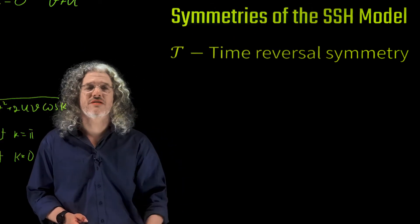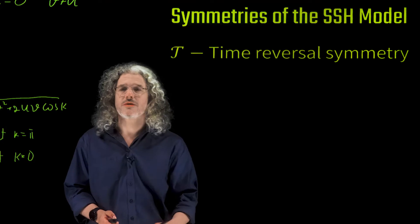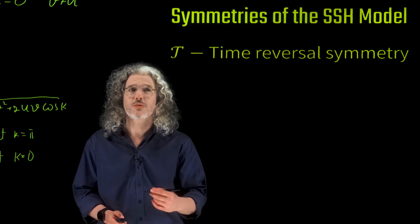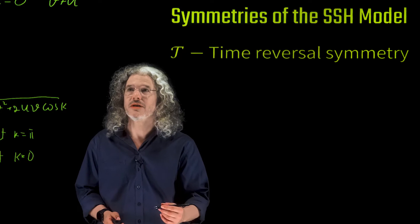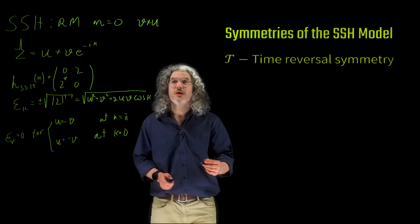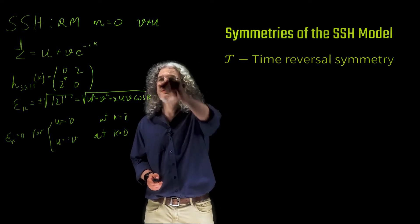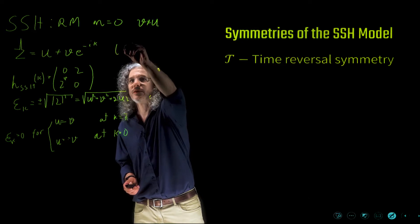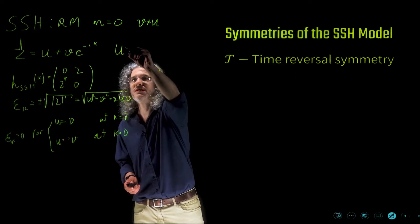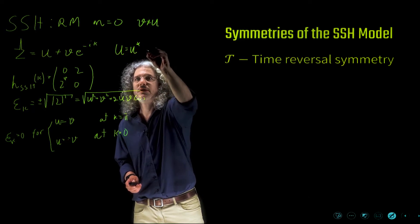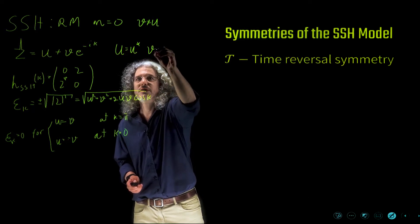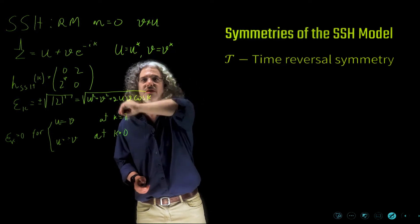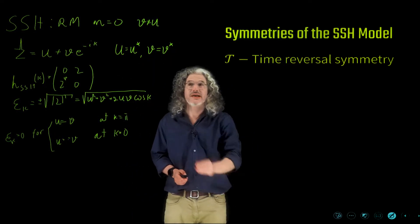Now we are ready to discuss the symmetries of the SSH model. The first symmetry we will discuss is time reversal symmetry. We chose both U and V as real numbers, so U equals U-star and V equals V-star. This is a property of the SSH model that guarantees time reversal symmetry.